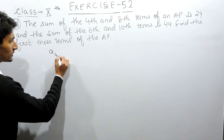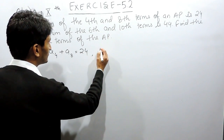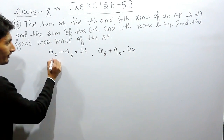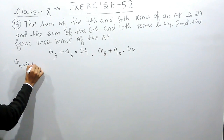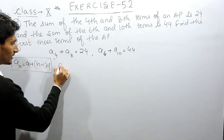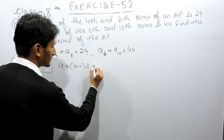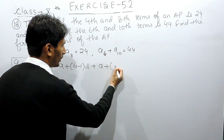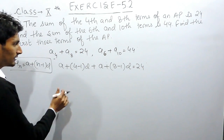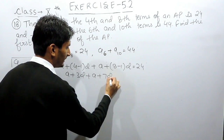We have the first equation as the 4th term plus the 8th term equals 24, and the second is the 6th term plus the 10th term equals 44. To find the 4th term, we have the formula for the Nth term: A plus N minus 1 into D. So the 4th term will be A plus 3D, and the 8th term will be A plus 7D, and their sum equals 24.